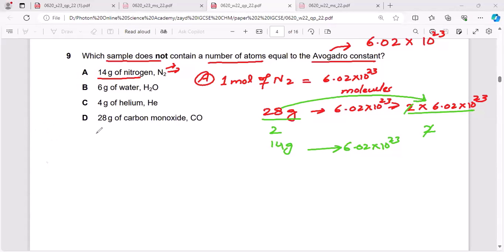Let's see option B. Option B, 6 grams of water. Now, 18 grams of water would have 6.02 times 10 raised to the power 23 molecules of water.